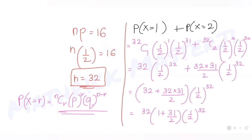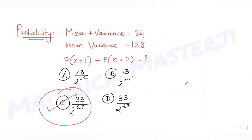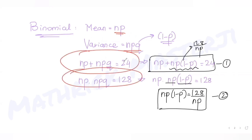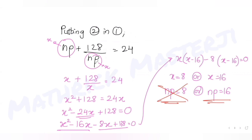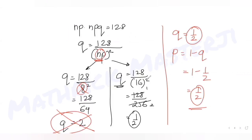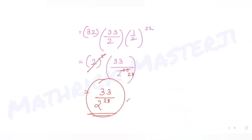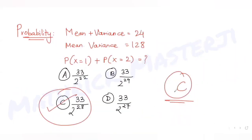The answer is 33 over 2 raised to 28, which matches option C. So C is the correct answer. To summarize: we used the sum and product of mean and variance (24 and 128), solved the two equations to find q = 1/2, p = 1/2, and n = 32, then applied the binomial probability formula to get the final answer.